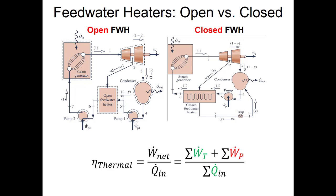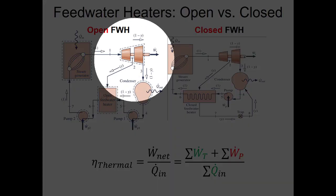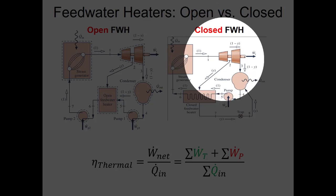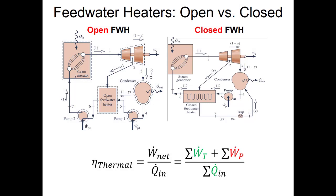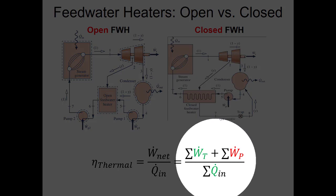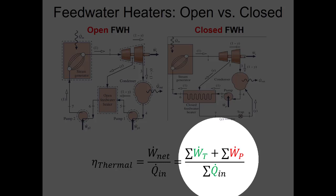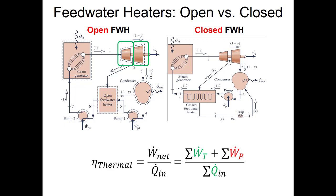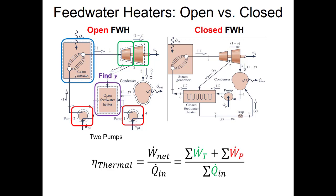Last class we talked about regenerative Rankine cycles, which are among the trickier cycles because we split the mass flow rate between the high-pressure and low-pressure turbines. This is true for both open and closed feed water heaters. The purpose is to lower the amount of heat put into the fluid before it enters the high-pressure turbine, which improves thermal efficiency — defined as net power over heat in — using all turbines, all pumps, and all heat addition locations.